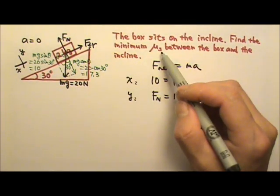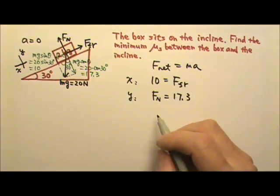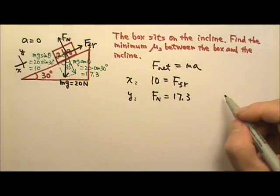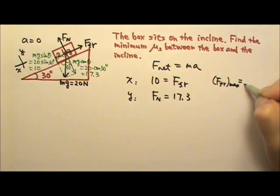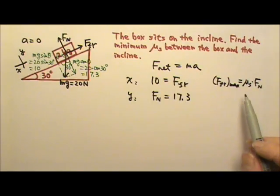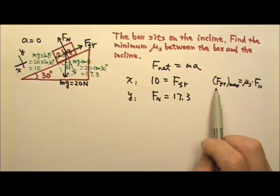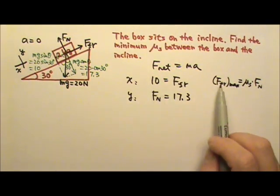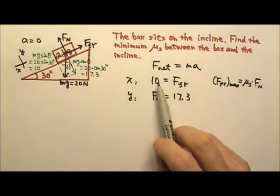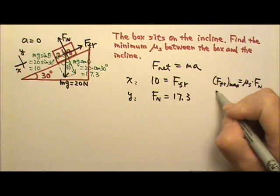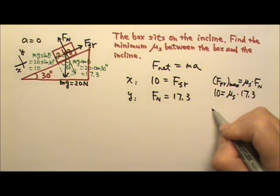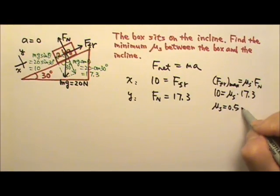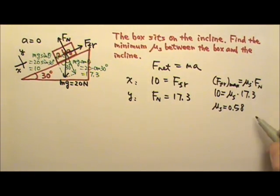These are not what we're looking for — we're looking for μs. The equation that involves μs is the maximum friction. The maximum friction equals μs times the normal force, which is 17.3 N. We're looking for the minimum μs, which means we are using the maximum friction. So maximum possible friction is 10, and that equals μs times 17.3, which gives us μs = 0.58. No unit.